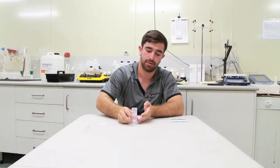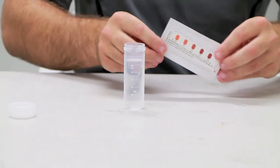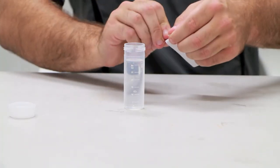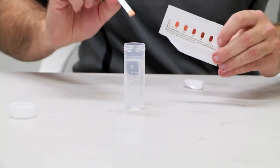To start our test, first fill your sample tube with your sample. Get your copper strips and tear it open, making sure not to tear the colour chart.